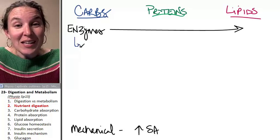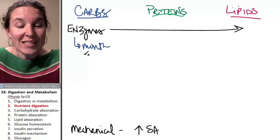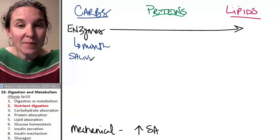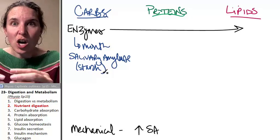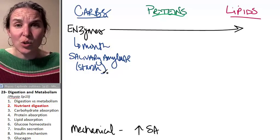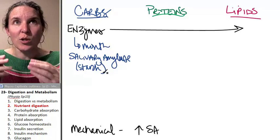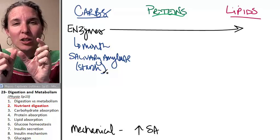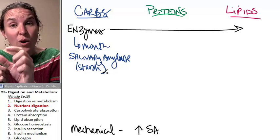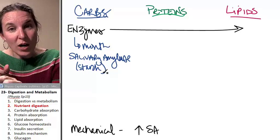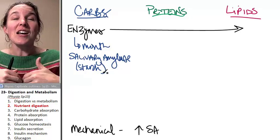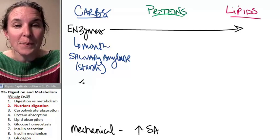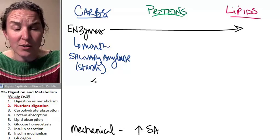Carbohydrate digestion begins in the mouth with salivary amylase. Salivary amylase breaks up starch into smaller pieces. Starch is like a huge chain of glucose molecules. Salivary amylase breaks up starch molecules into smaller sequences - disaccharides or trisaccharides, smaller groups of glucose molecules.